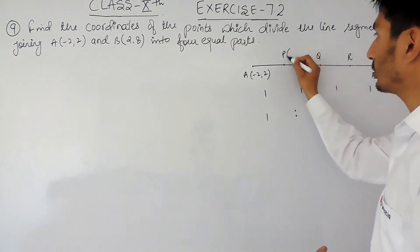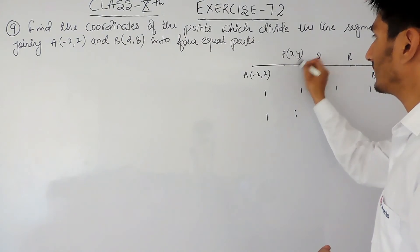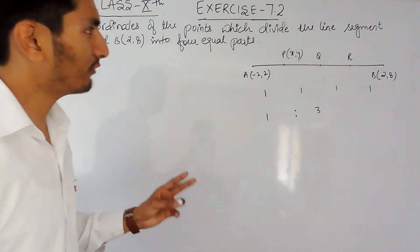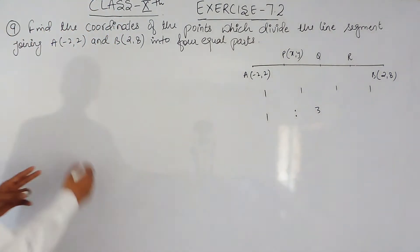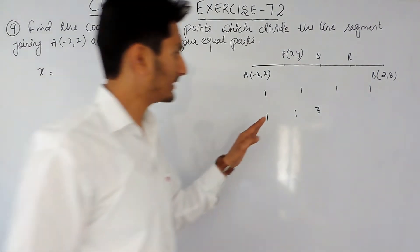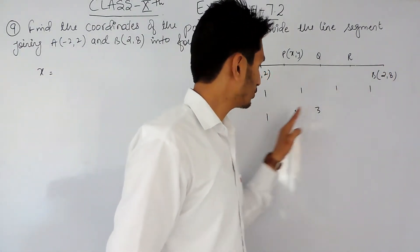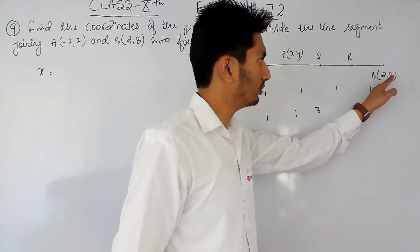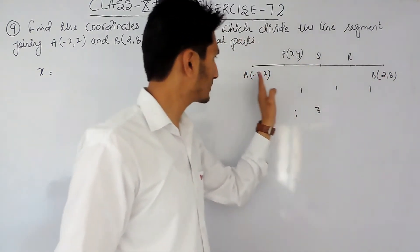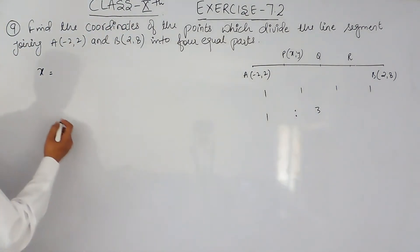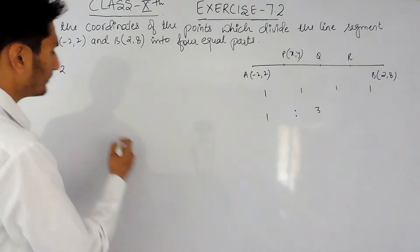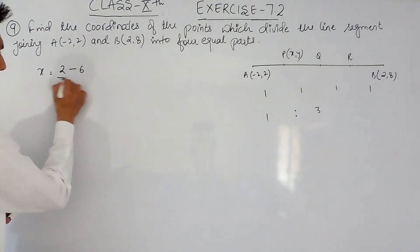Now I have to find the coordinate for this point P. I have to use the section formula, and to find the first coordinate I have to multiply diagonally. So I multiply 1 with x₂ (which is 2) and then multiply 3 with x₁ (which is minus 2). So 1 multiplied by 2 will be 2, and 3 multiplied by minus 2 will be minus 6.